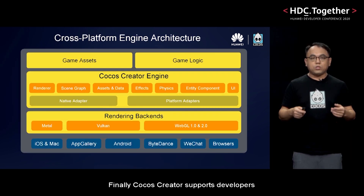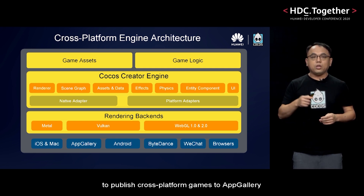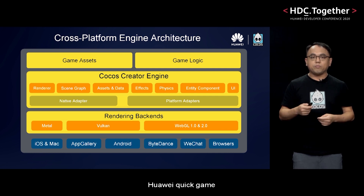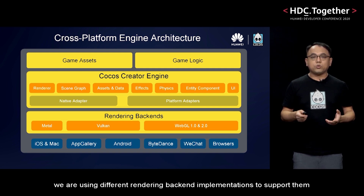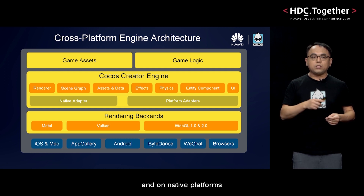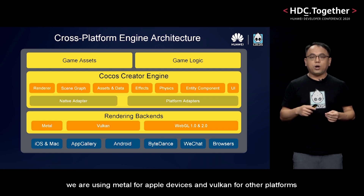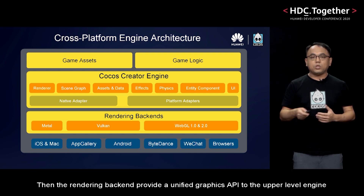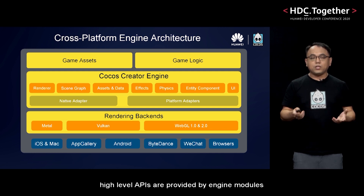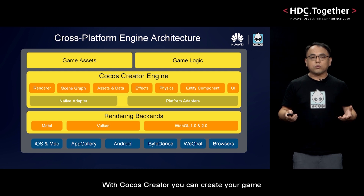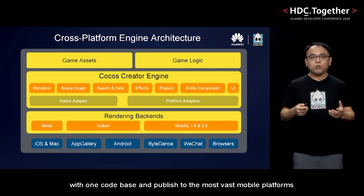Finally, COCOS Creator supports developers to publish cross-platform games to App Gallery, Google Play, App Store, web browsers, and almost all instant gaming platforms, including Baidu mini-game, Huawei Quick Game, WeChat mini-game, etc. Upon all these platforms, we use different rendering backend implementations to support them. Web and instant gaming platforms all provide WebGL graphics APIs. On native platforms, we use Metal for Apple devices and Vulkan for other platforms, like Huawei App Gallery. The rendering backend provides a unified graphics API to the upper-level engine. Higher-level APIs are provided by engine modules such as SceneGraph, Assets, and Components. With COCOS Creator, you can create your game with one code base and publish to the most vast mobile platforms.